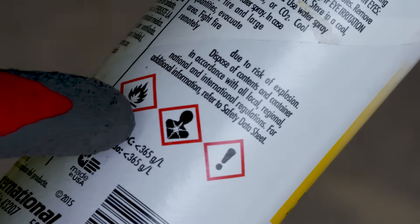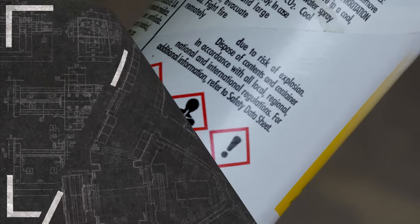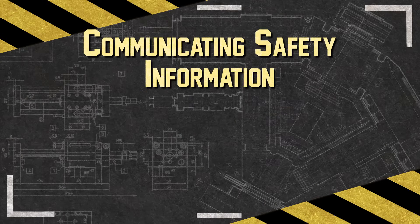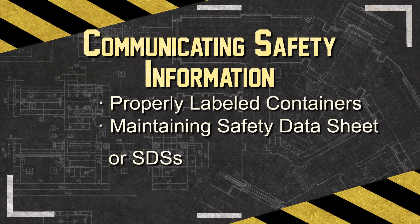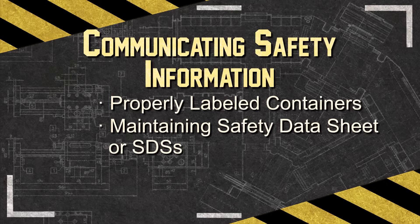There are two primary methods of communicating chemical safety information. One, ensuring containers of hazardous chemicals are properly labeled. And two, maintaining safety data sheets, or SDSs, which are sources of detailed information on the hazardous chemical.